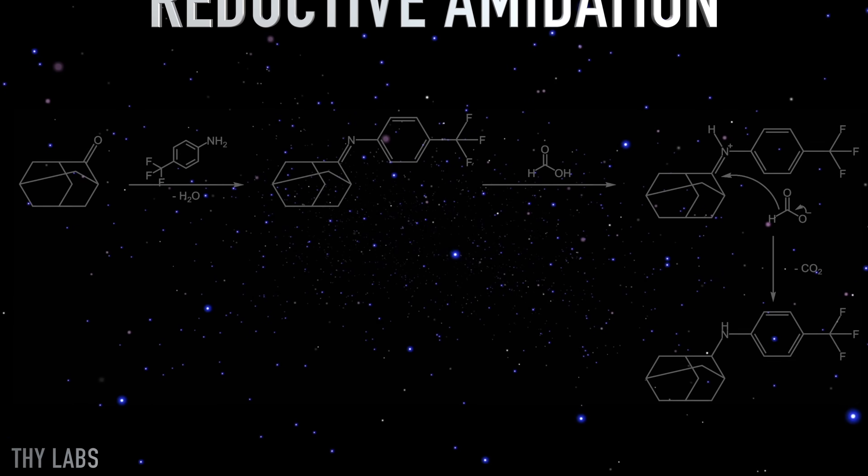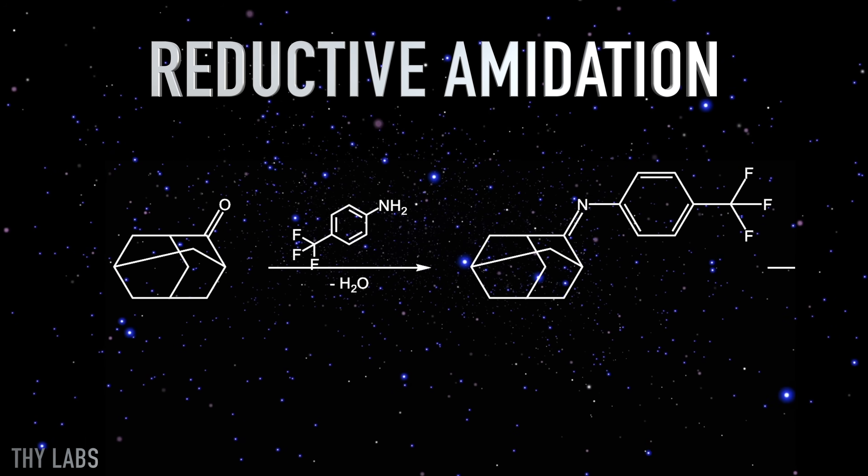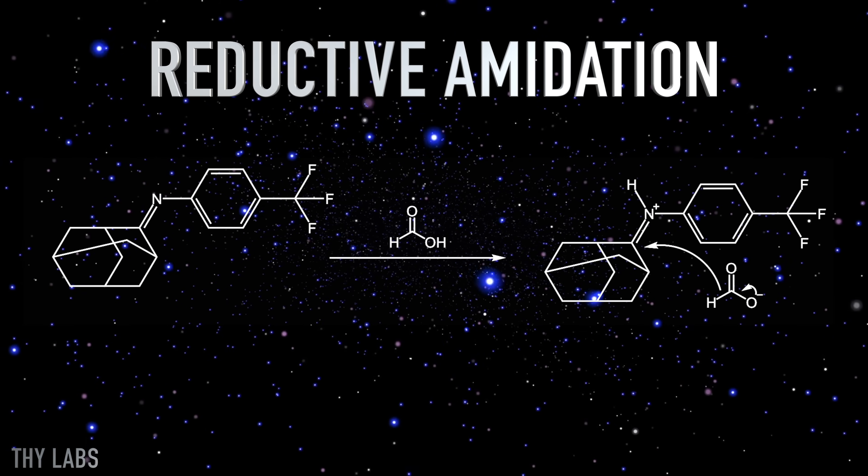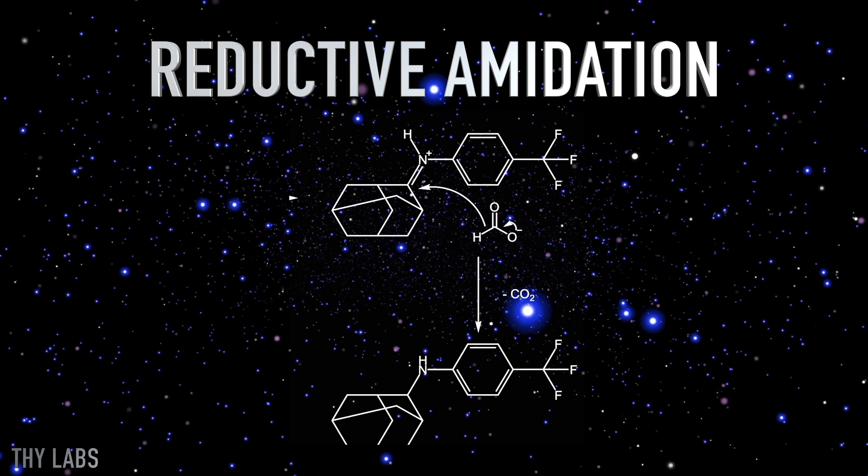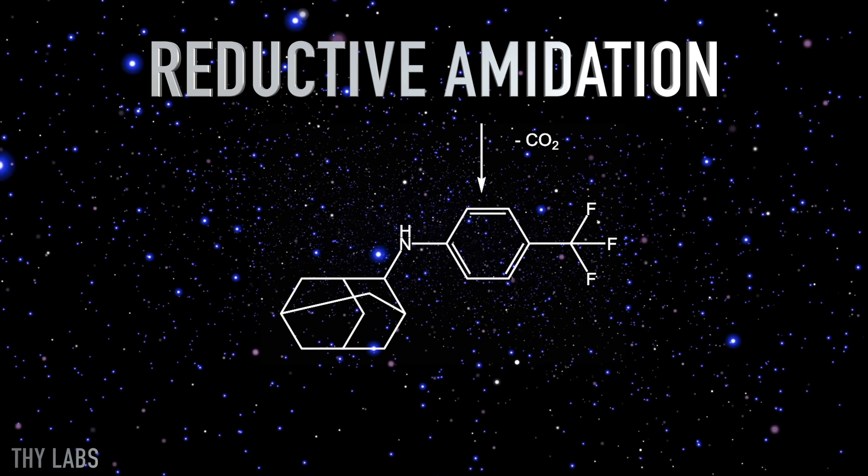The reaction that took place is called a reductive amination. In the first step, the ketone reacts with the amine to form an imine. The formic acid protonates the imine and the formate anion acts as a hydrogen donor and with carbon dioxide being split off, the imine is reduced to an amine.